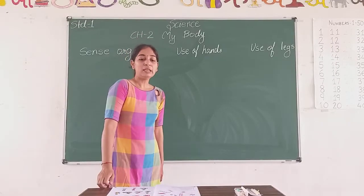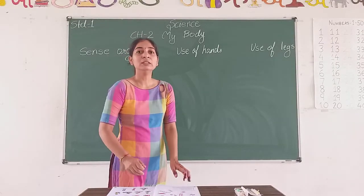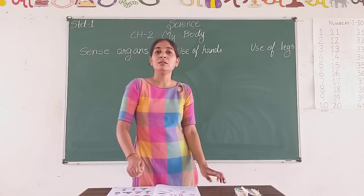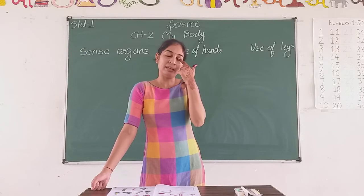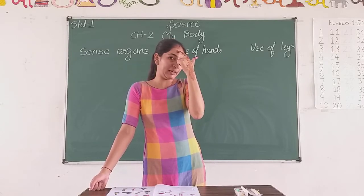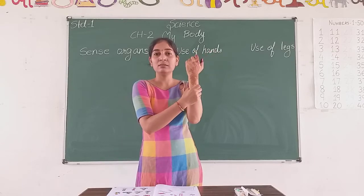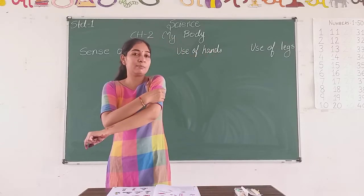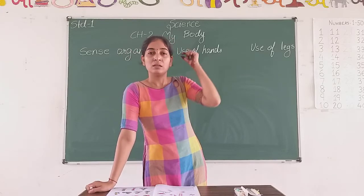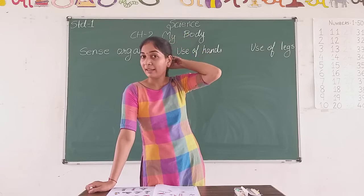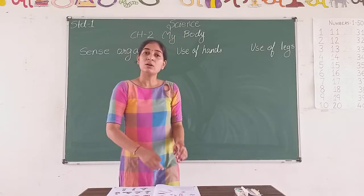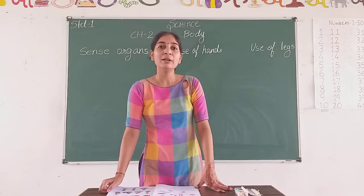Friends, today we will learn about the sense organs. In our previous class, we learnt the parts of the body — for example, eyes, nose, forehead, hands, arms, mouth, ears, head, hair, and legs. These are all the parts you learnt in your previous class.